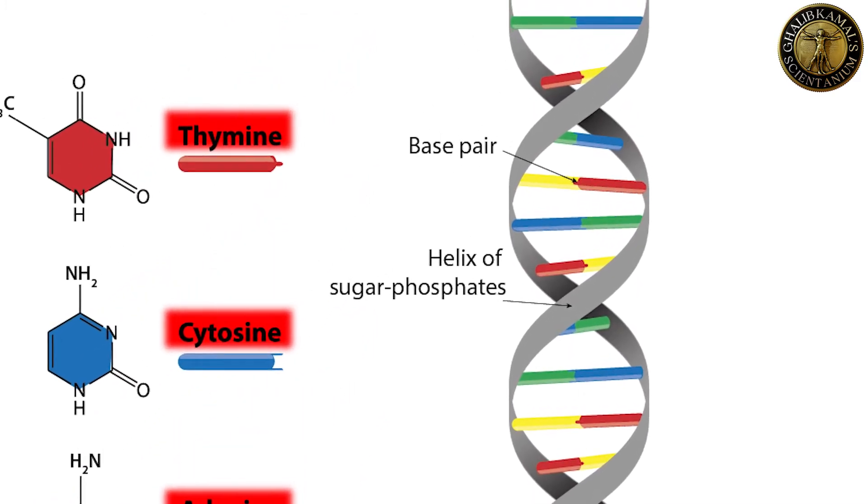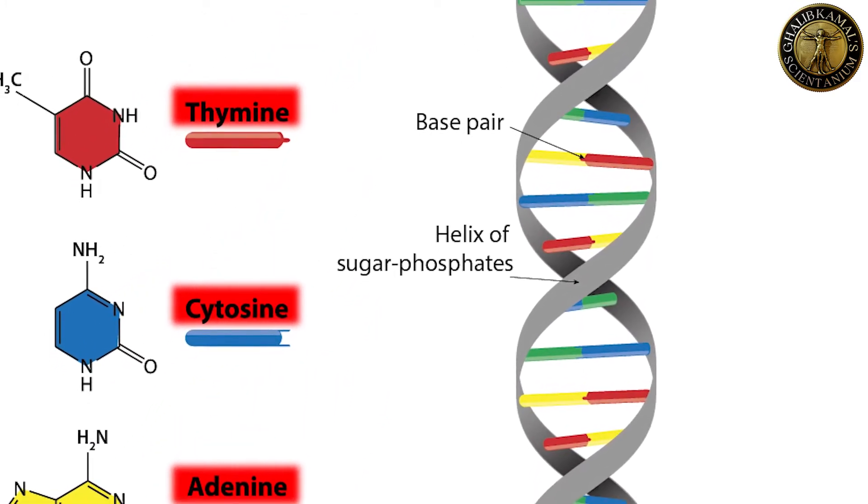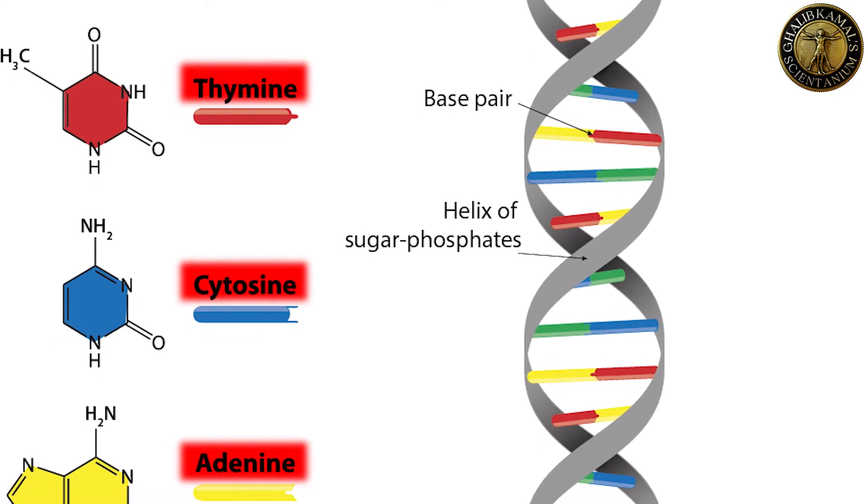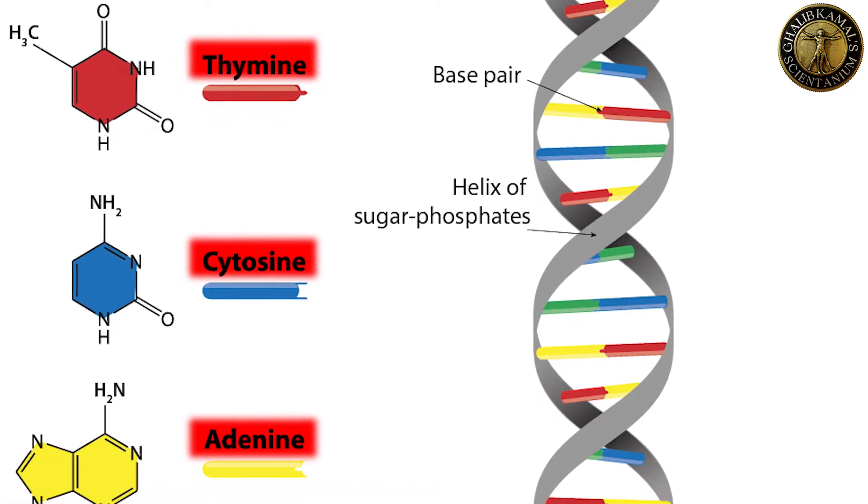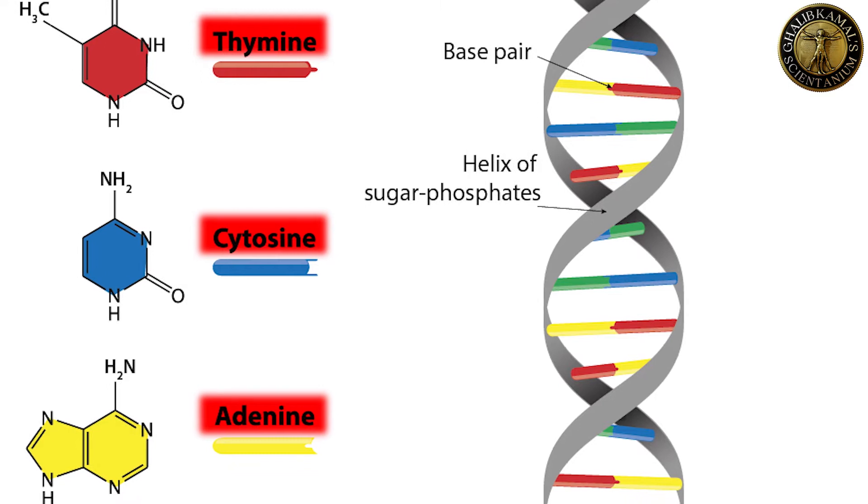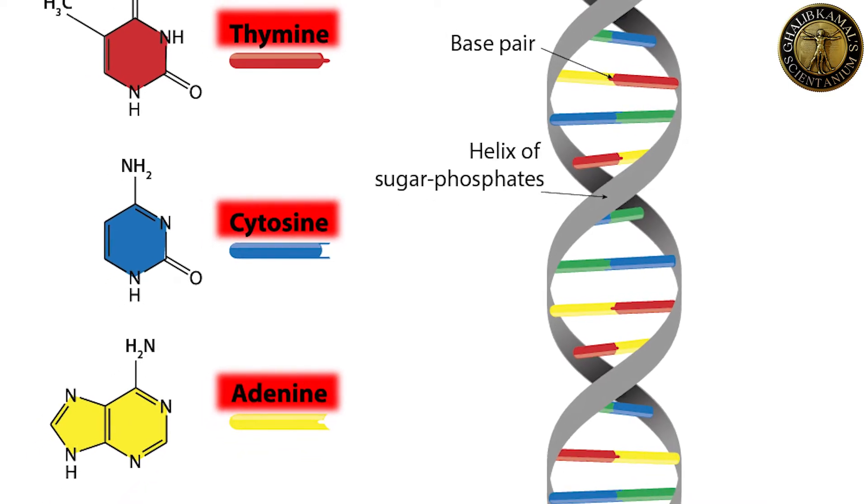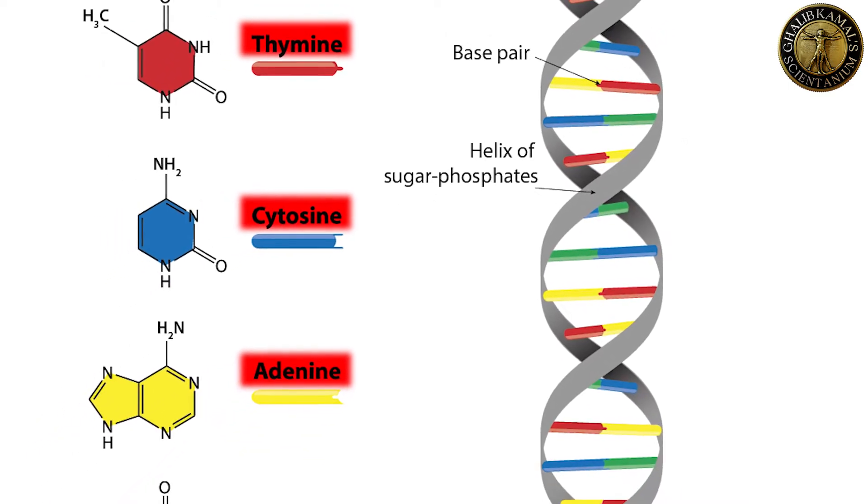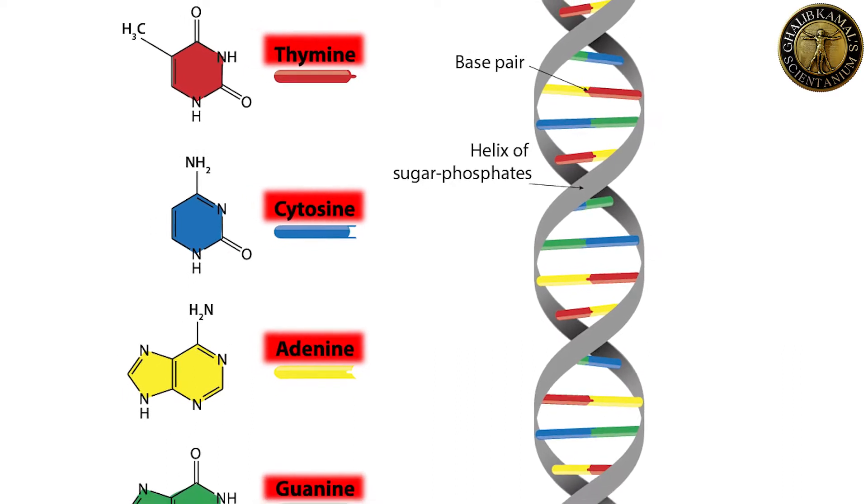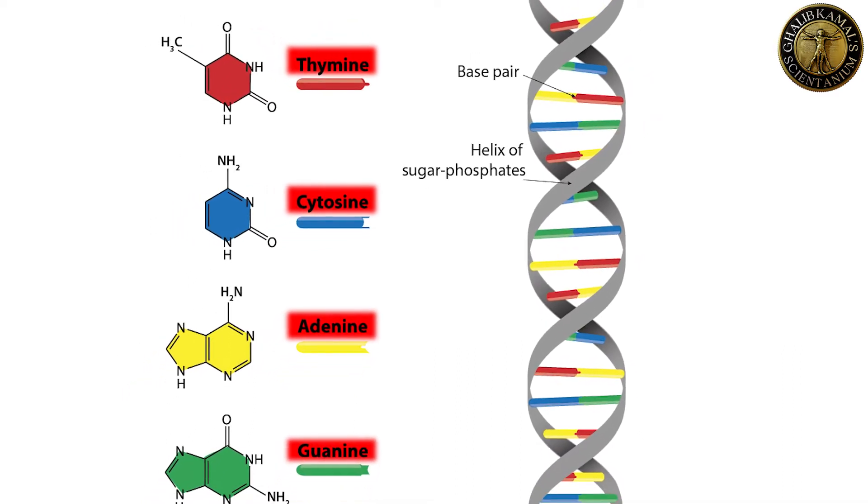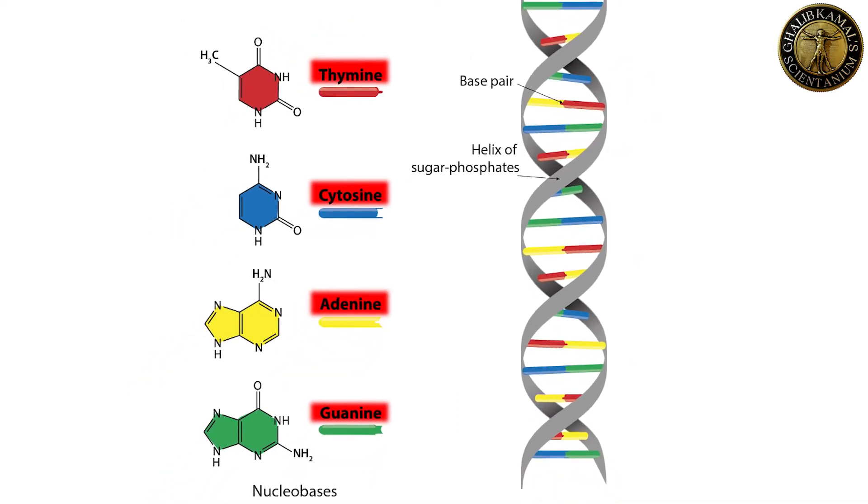DNA is present in every cell in a double helix molecular structure with an external sugar phosphate backbone. In this structure, adenine is only paired with thymine and guanine can only pair with cytosine as a rule.